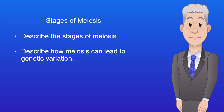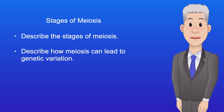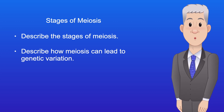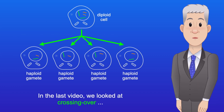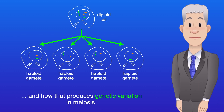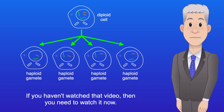Hi, and welcome back to Free Science Lessons. This is the second part of a two-part video on meiosis. You should be able to describe the stages of meiosis and how meiosis can lead to genetic variation. In the last video, we looked at crossing over and how that produces genetic variation in meiosis. If you haven't watched that video, you need to watch it now.